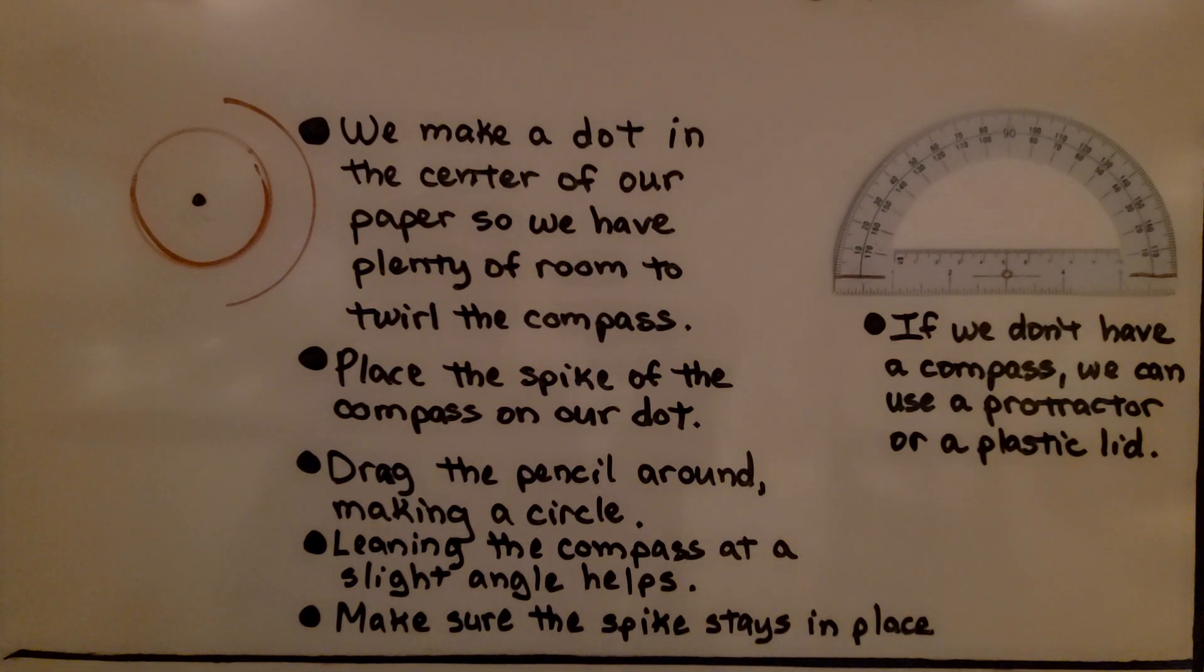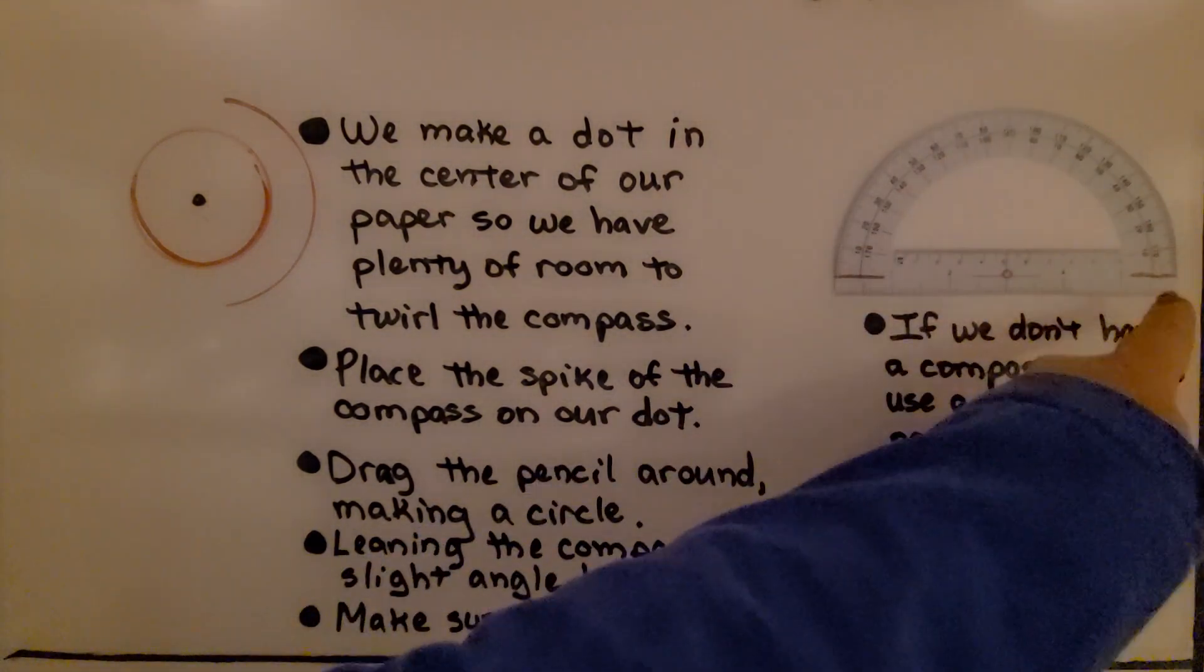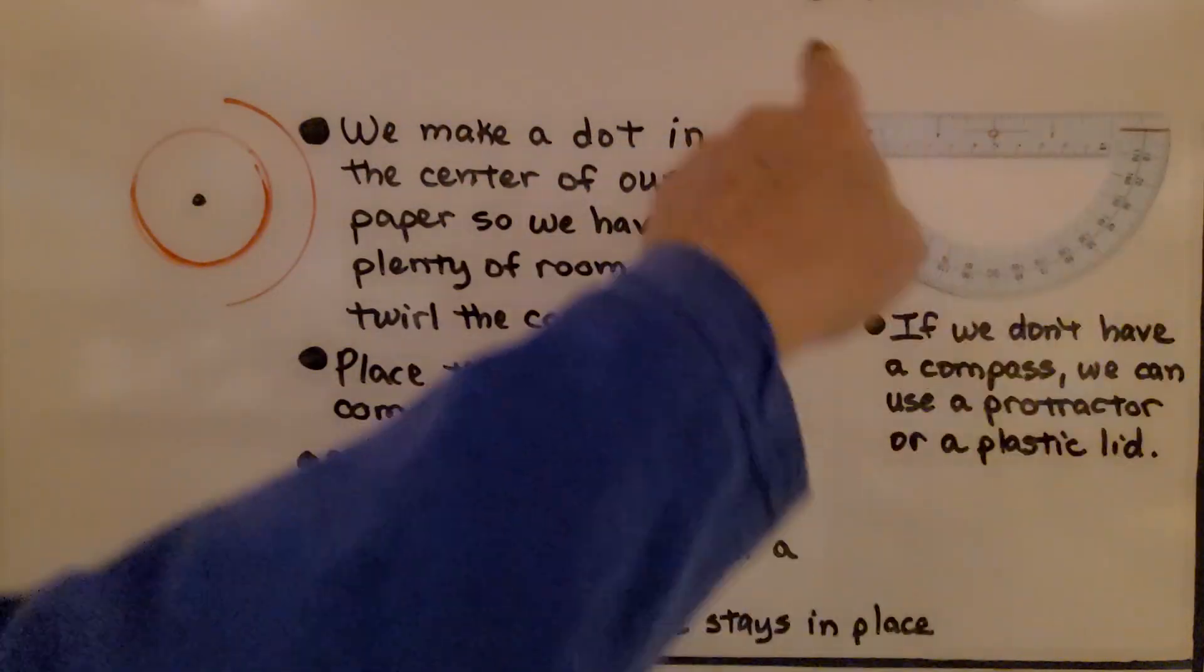Now, if we don't have a compass, we can use a protractor. We can trace the arc of the protractor and then spin the protractor around to do the bottom of the circle.